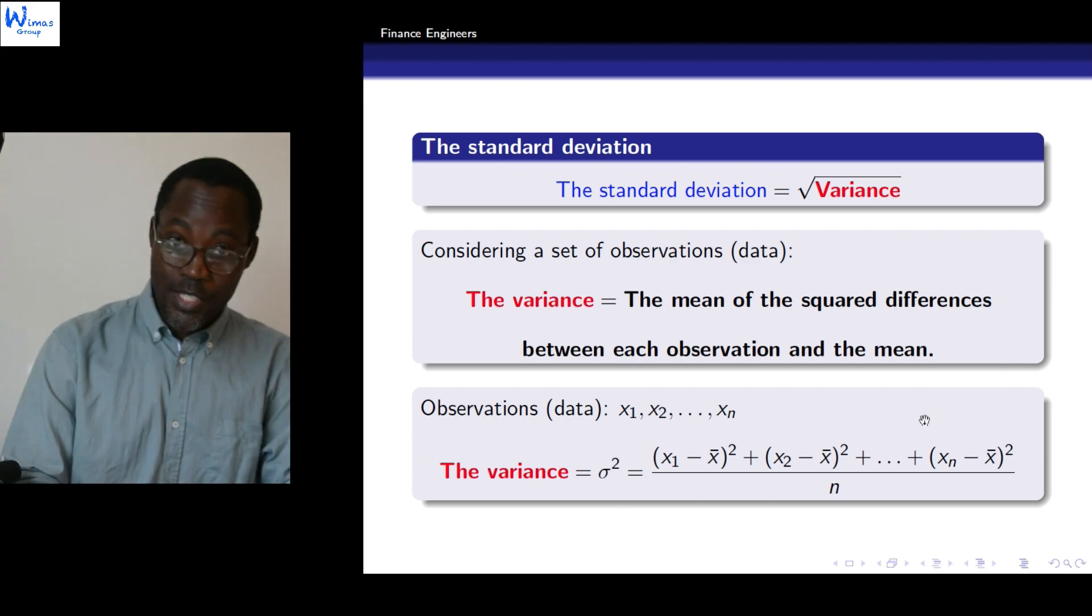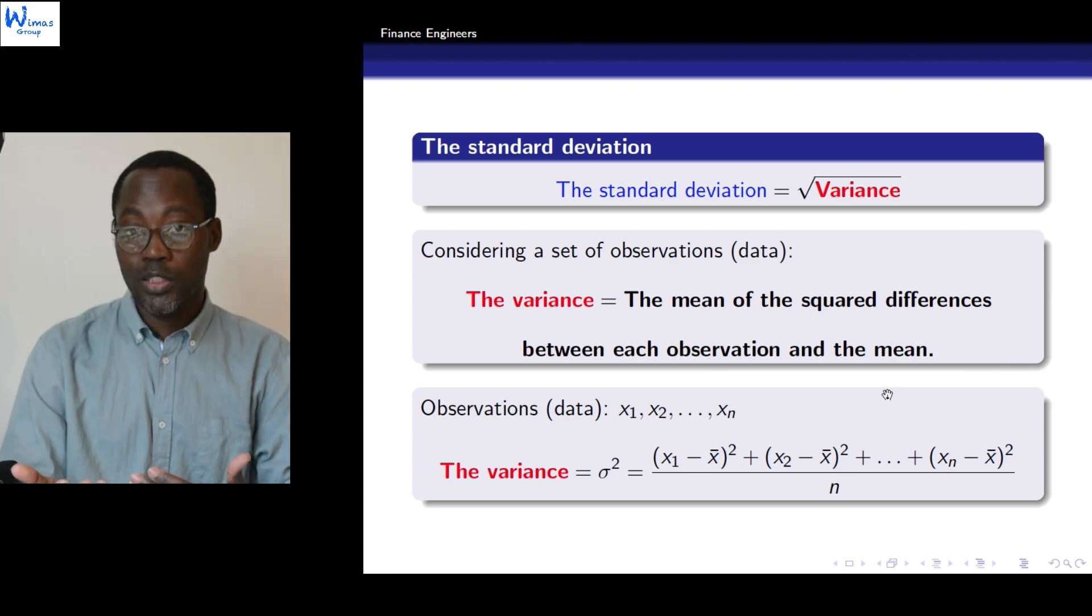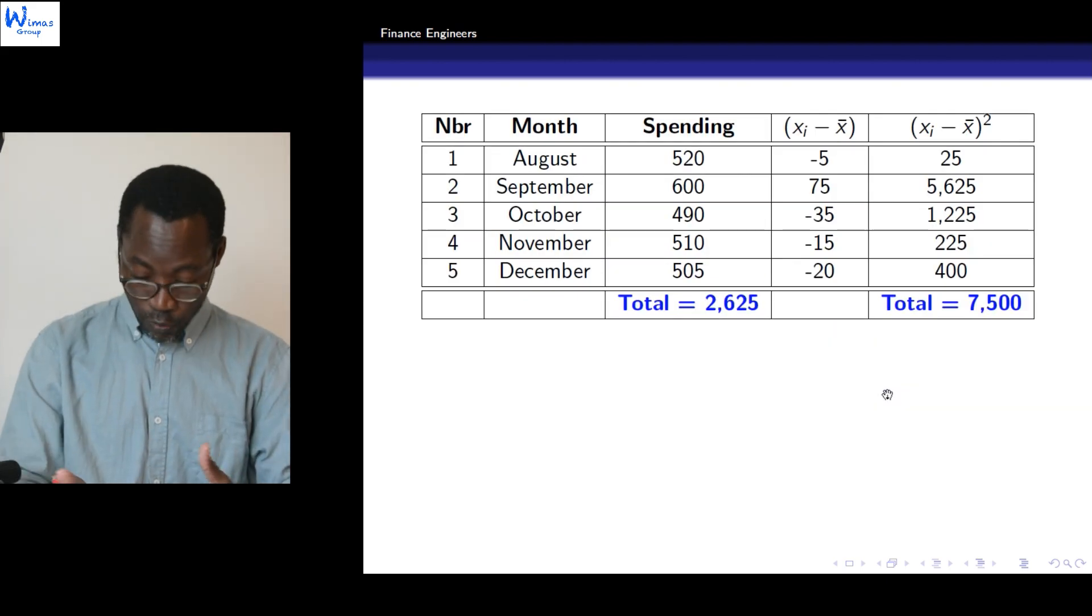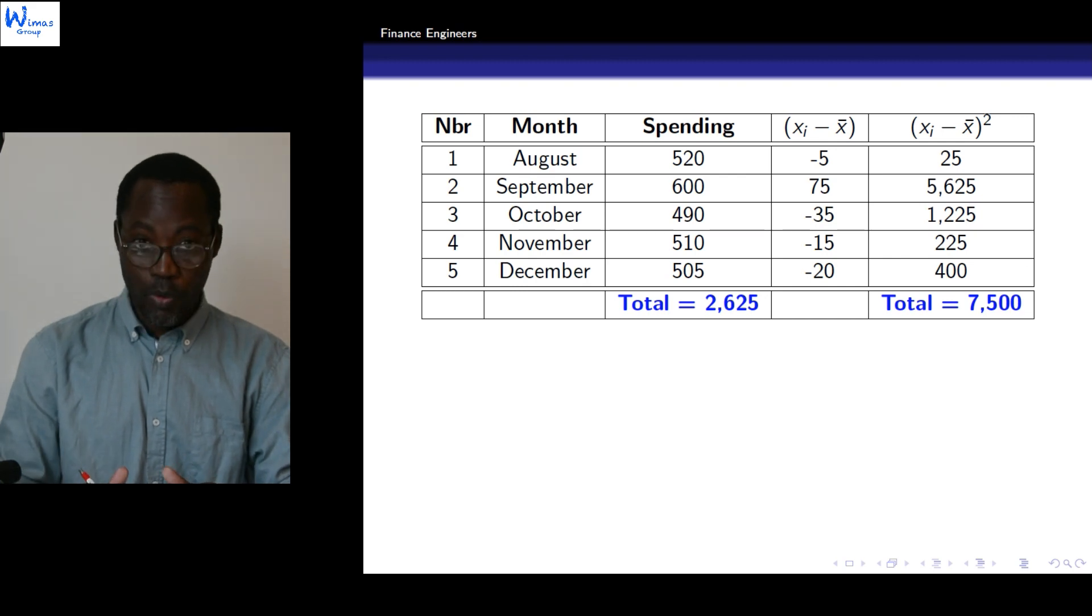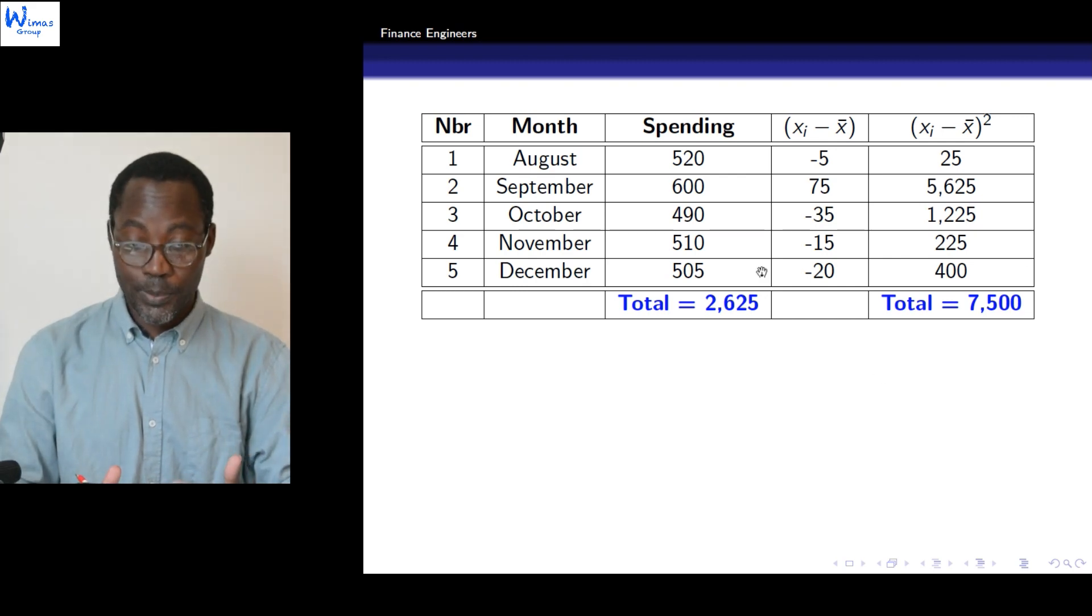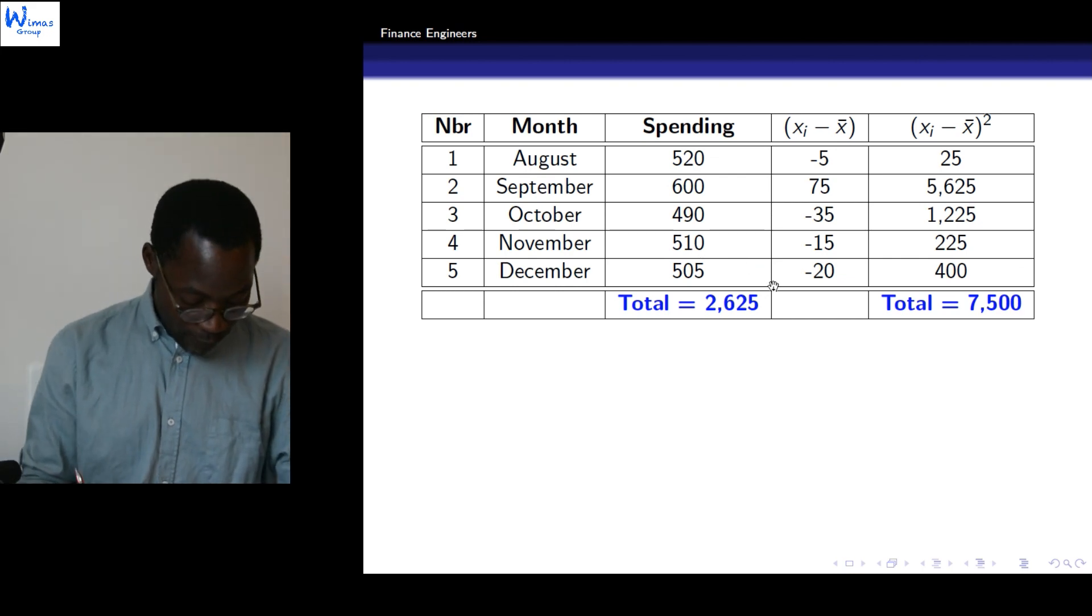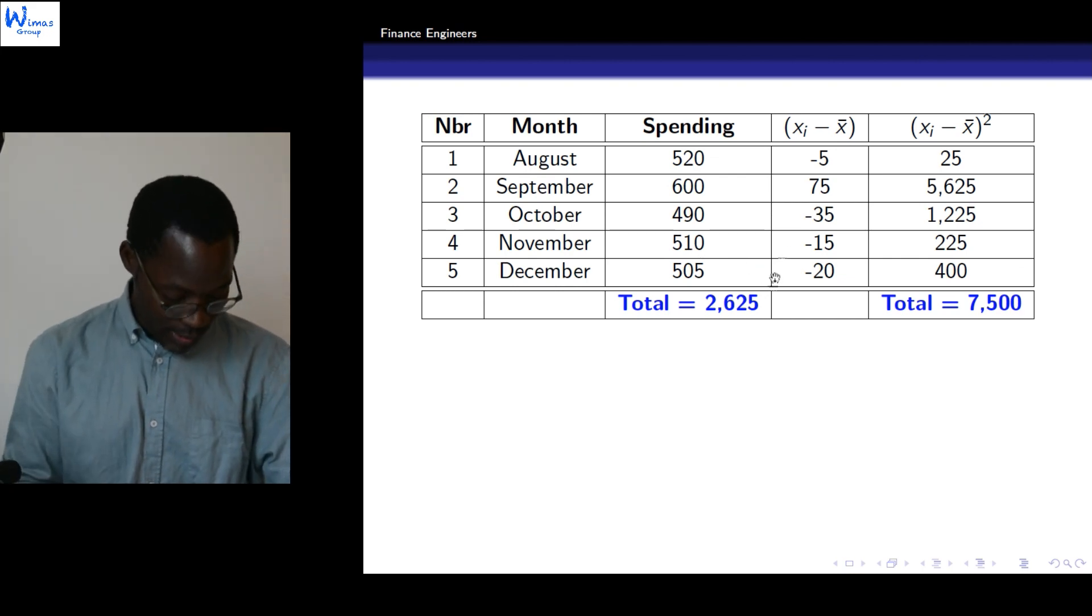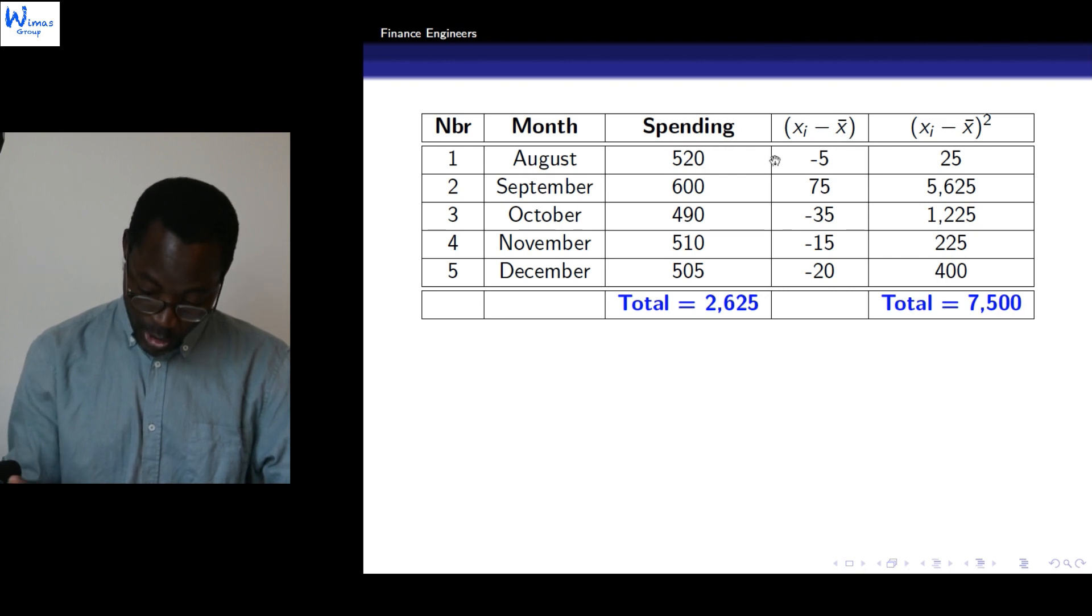Let's use our example and see how the standard deviation of Paul's spending is. We will take first of all the differences. By taking 520 minus the mean which is 525, we will obtain negative 5.